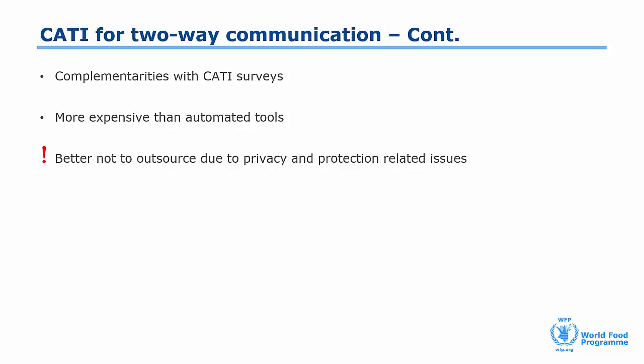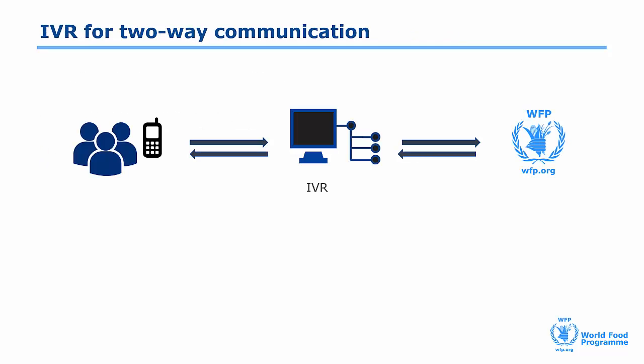At WFP, we also use IVR for our two-way communication system. In this case, incoming phone calls are received by an IVR system. By pressing the numbers on their phone's keypad, people can navigate through a menu of pre-recorded messages that contain useful information. They can also record feedback or complaints. A history of all received calls is saved in the system, including phone numbers, the time of day the call took place, duration of the call, and selections made during the call.